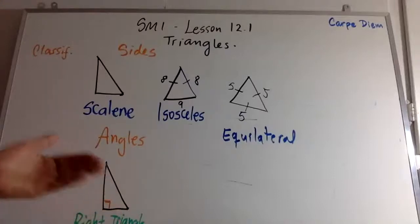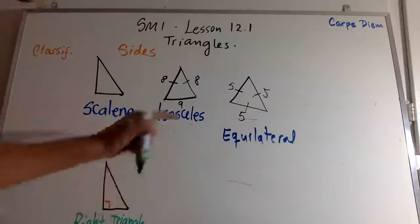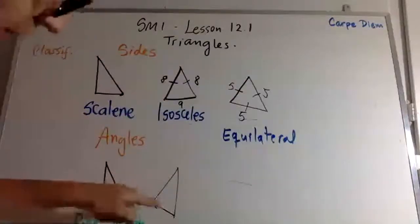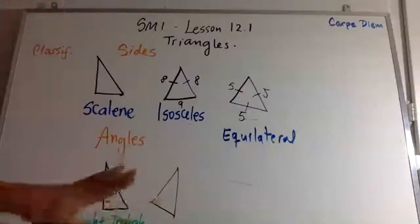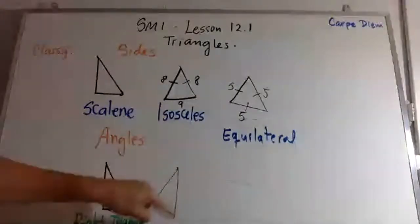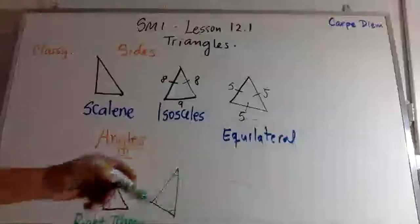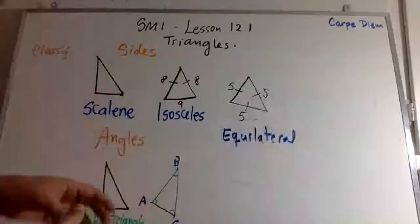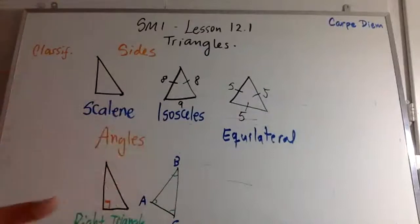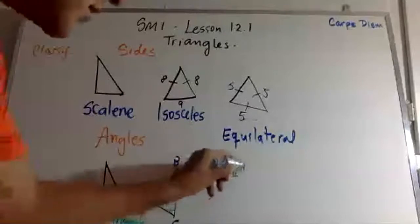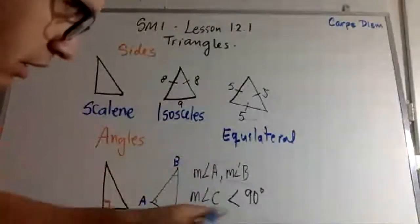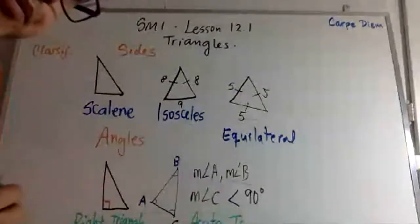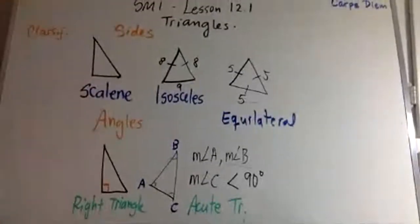Moving on — look at this triangle. All the angles here: this one, this one, and this one. If the measure of angle A, the measure of angle B, and the measure of angle C are all acute, then we call this an acute triangle.